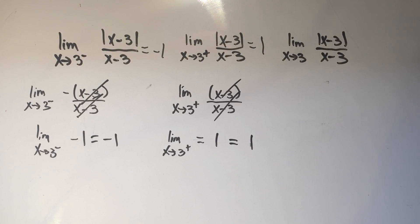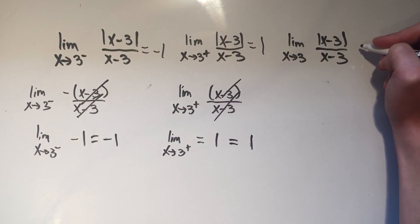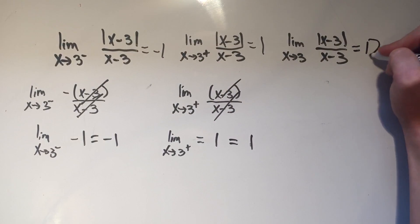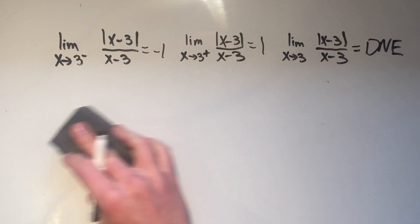Now, if you watched my last video on left and right-hand limits, I said that if the left-hand limit does not equal the right-hand limit, and that's the case here because negative one does not equal positive one, if the left-hand limit does not equal the right-hand limit, then that means the two-sided limit does not exist. So those are the answers for those three questions.